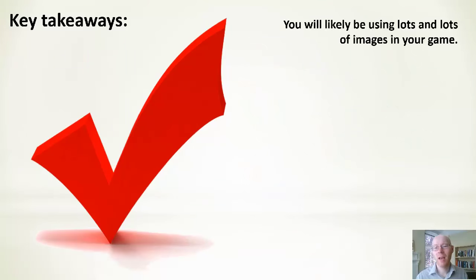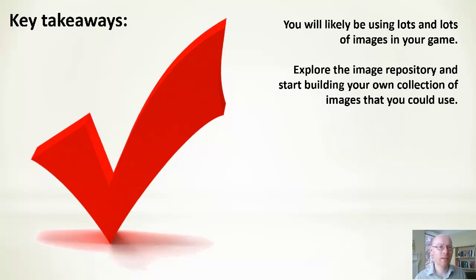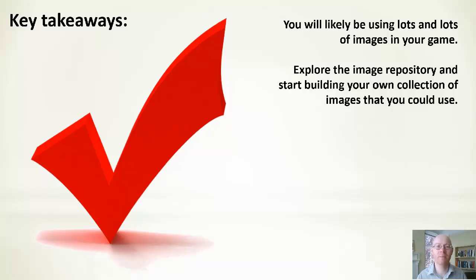Key takeaways: you'll likely be using lots of different types of images in your game and combining them in lots of different ways. Do have a look at the repository and what's available online, but as mentioned, if you can't find what you need, a compromise is perfectly fine — it will not have any impact on the marking scheme. This finishes the introductory talk. Next, we're going to look at alpha blending and animation in the next in the series.